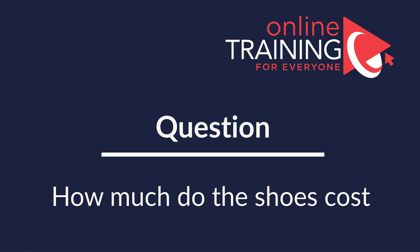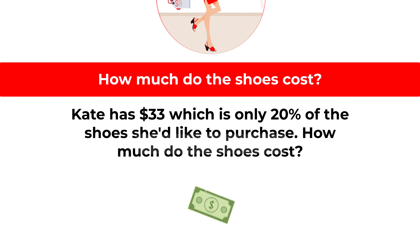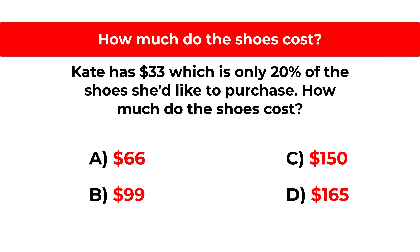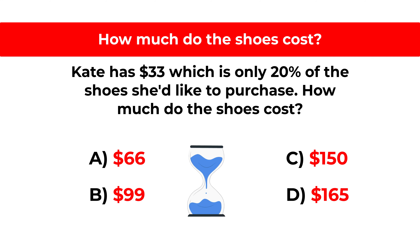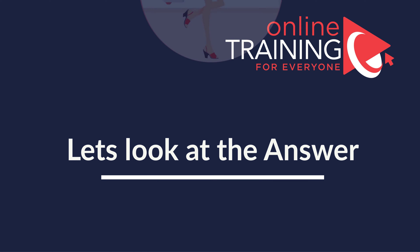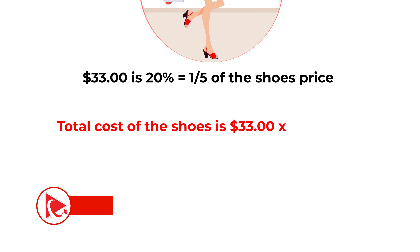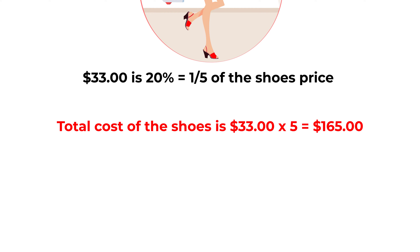Here's a cool question you frequently get on the test. Kate has $33, which is only 20% of the cost of shoes she would like to purchase. How much do the shoes cost? Choices: A is $66, B is $99, C is $150, D is $165. The answer is simple: $33 is 20% or one-fifth of the shoes' price, so the total cost is 33 × 5 = $165. The correct answer is choice D.